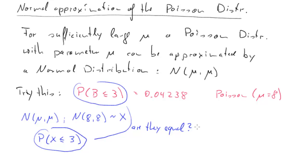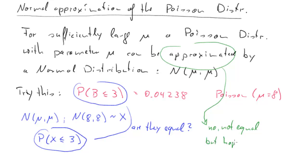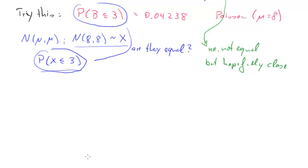One answer we can already give is that, following from the word 'approximated', the answer is no — not exactly equal, but hopefully close. We will determine how close it really is. We calculate this by translating the problem into a standard normal problem: P(x ≤ 3) equals P(Z ≤ ...) where we standardize the value 3.